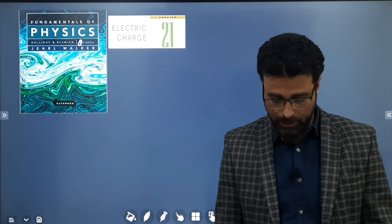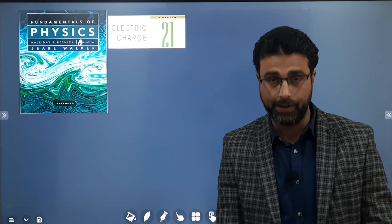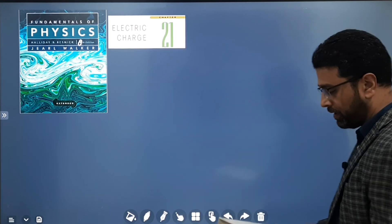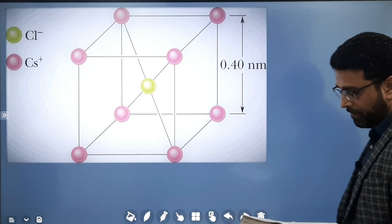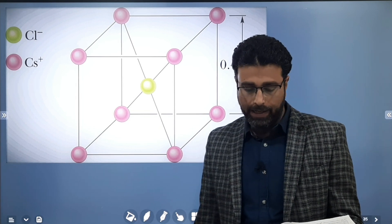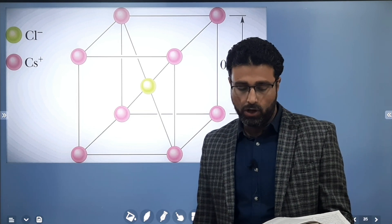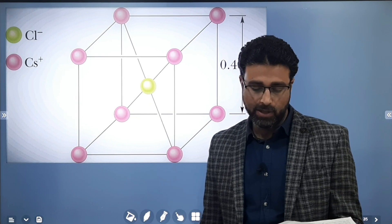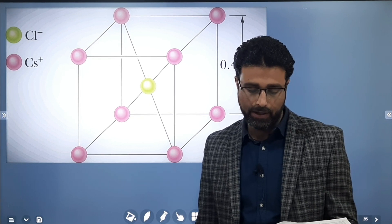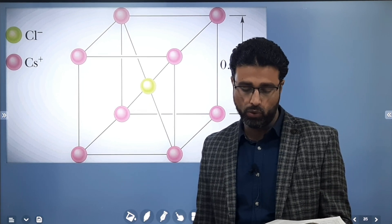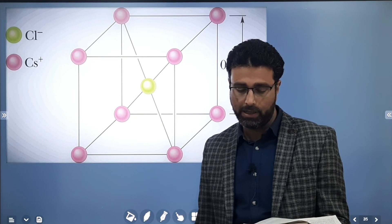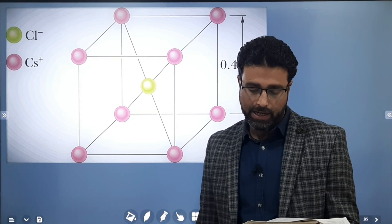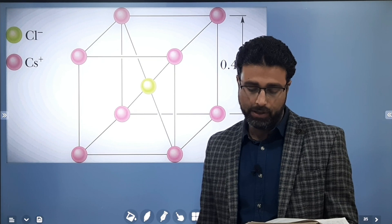We are continuing Halliday Resnick Walker. In this session, we will do problem number 35. In crystals of the salt cesium chloride, cesium ions Cs⁺ form the eight corners of a cube and the chlorine ion is at the cube center. The edge length of the cube is 0.4 nanometers.